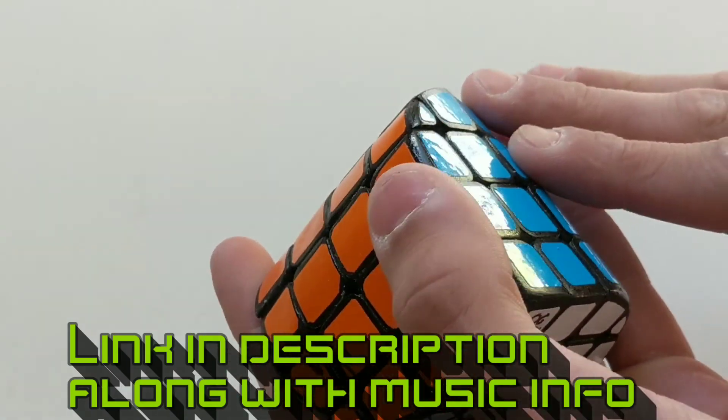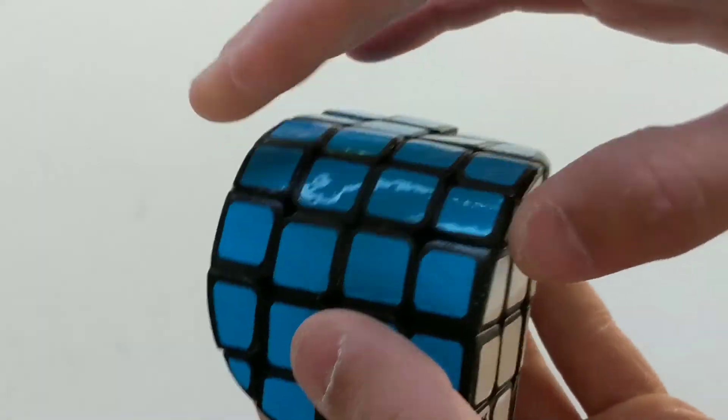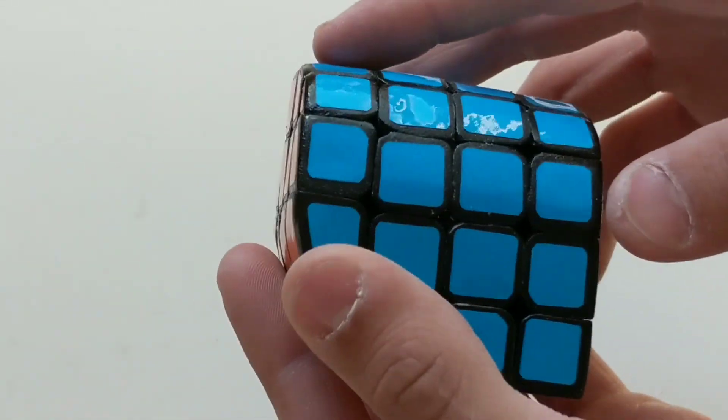How I did it was I took an NF4 and sanded it down to how I wanted the shape to be.